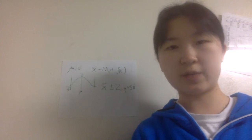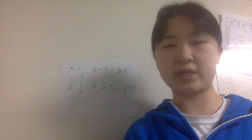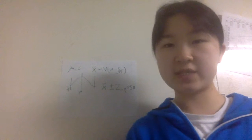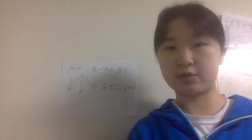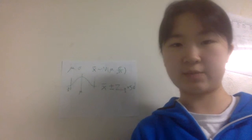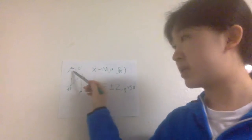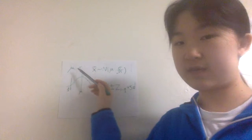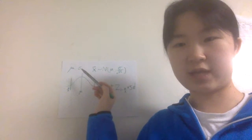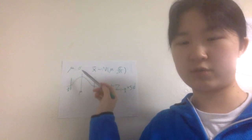The most commonly used confidence level is 95%. There are some common steps to compute a confidence interval. We'll use the population mean as an example. Suppose we have a population with mean mu and standard deviation sigma. Here, we're not assuming that the population follows a normal distribution.